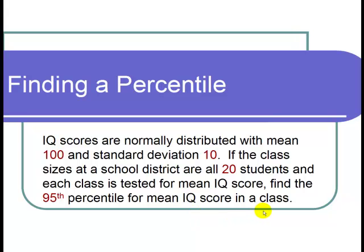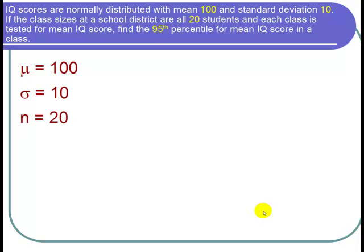So let's first write down the cast of characters. The mean IQ score is 100, so mu is 100. The standard deviation is 10, so sigma equals 10. And each class has 20 students, that's the sample size, n equals 20.